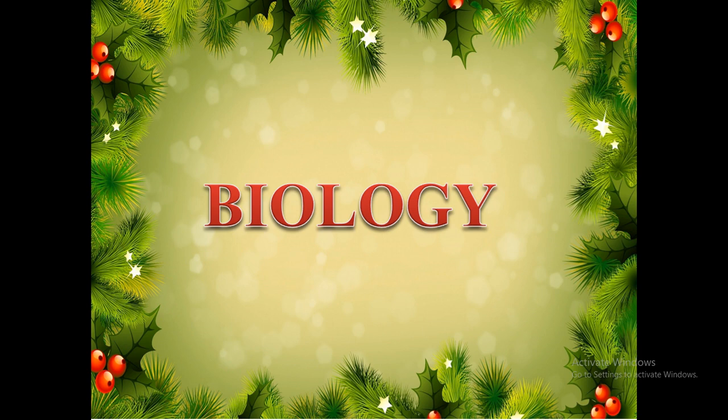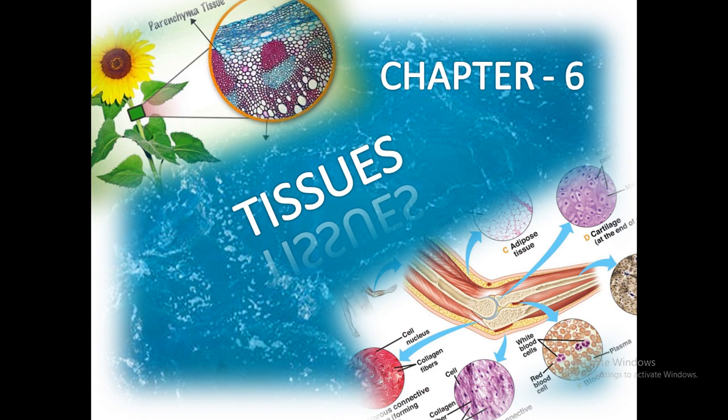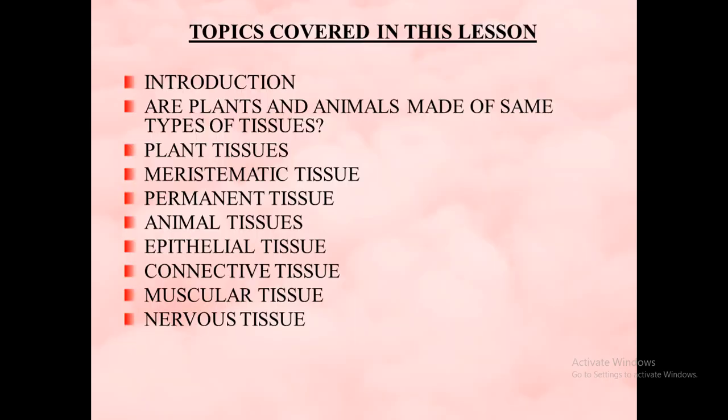Good morning, dear students. Today we are going to learn about Chapter 6: Tissues. Topics covered in this lesson are: Introduction, are plants and animals made of the same types of tissues? Plant tissues are meristematic and permanent tissues. Animal tissues are epithelial, connective, muscular and nervous tissue.